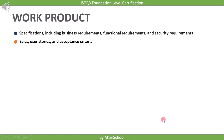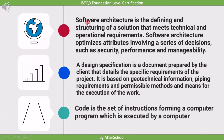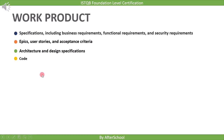The next work product is architecture, design specifications, and code. Software architecture is the defining and structuring of a solution that meets technical and operational requirements, optimizing attributes like security, performance, and manageability. A design specification is a document prepared by the client detailing specific project requirements. Code is the set of instructions forming a computer program which is executed by a computer.